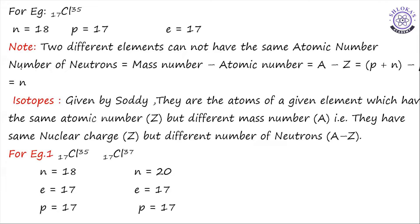An important note: no two different elements can have the same atomic number. All 118 elements in the periodic table have a unique atomic number. Also, the number of neutrons can always be found using the formula: N equals A minus Z.